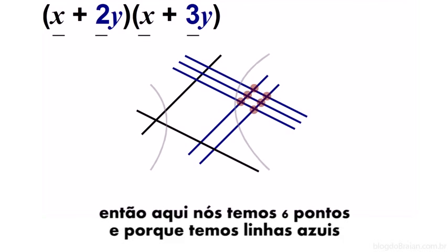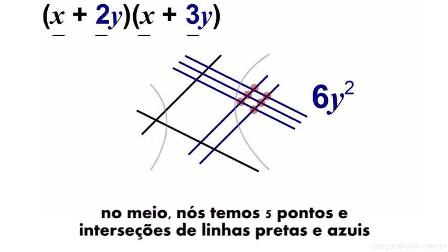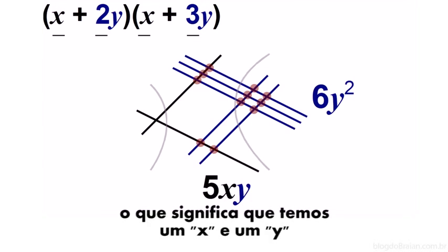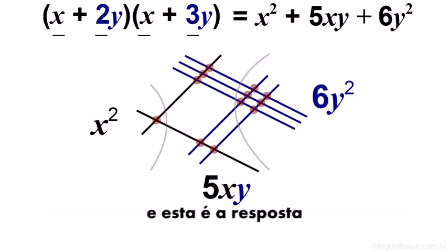So here we have six dots. And because both of the lines are blue, that means it's y squared. In the middle, we have five dots. And these are the intersections of a black and blue line, which means it will be an x and a y. On the end, we just have one dot. And that's for two black lines, so it's x squared. So that's the answer.